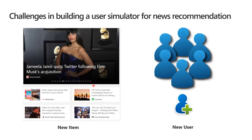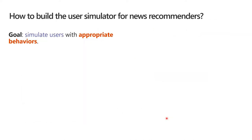Building a user simulator for news recommendation has some unique challenges. On the one hand, news recommenders need to deal with diverse news items. They are generated almost every minute and can quickly become out of date within a few days or even hours. So the simulator should be capable of modeling user interest over fast-changing and highly diverse news collections. Second, to prevent the trained RL agent overfitting to the static dataset, the simulator should also go beyond the current dataset and generate new users with similar behaviors as real users. So, how to build the user simulator for news recommenders?